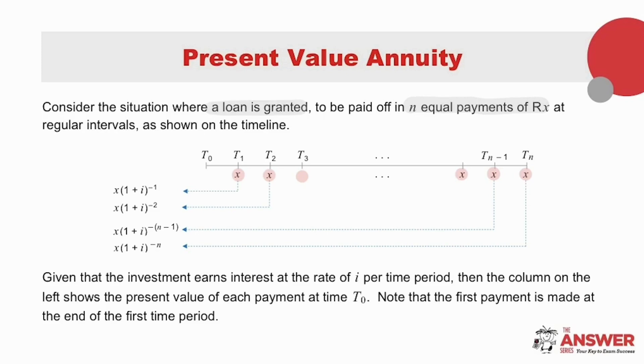Given that the investment earns interest at the rate of i per time period, we want to scale back all these payments to see what their present value would be worth. In other words, we want to look at the t0 value in each case. Starting with the first payment at t1, it will be scaled back for one time period, so we get x times 1 plus i to the negative 1. The payment made at the second time period will be scaled back for two time periods, so we times x by the compounding factor to the negative 2, and so on, all the way until the final payment made after n time periods, which will be scaled back n times, so x will be times by the compounding factor to the negative n.